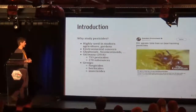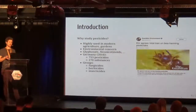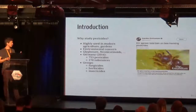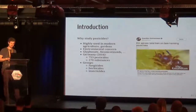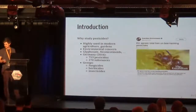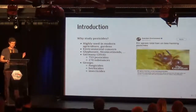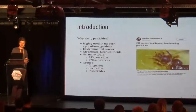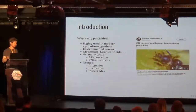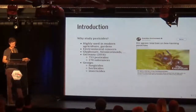Why is it interesting to study pesticides? In modern agriculture nowadays they are highly used, and also in private gardens they are of environmental concern. You may have followed the debate about glyphosate or neonicotinoids in the media — for example, neonicotinoids were just prohibited two or three weeks ago by the EU Commission. Just in Germany there are about 750 products with around 270 different substances, grouped mainly into fungicides, herbicides, and insecticides, which target different taxonomic groups like fungi, plants, and insects.